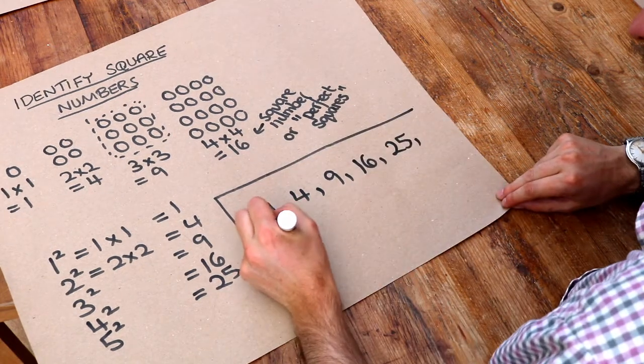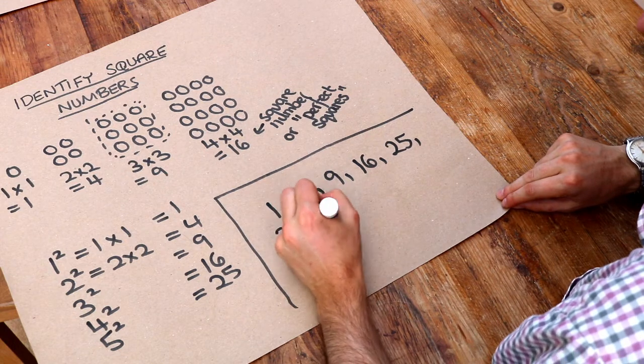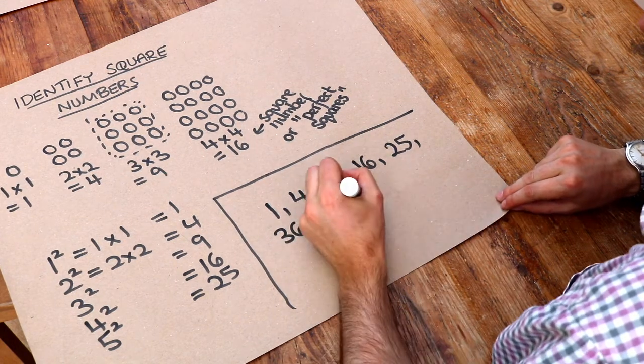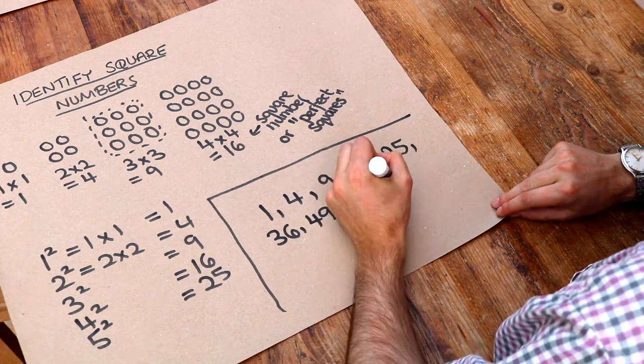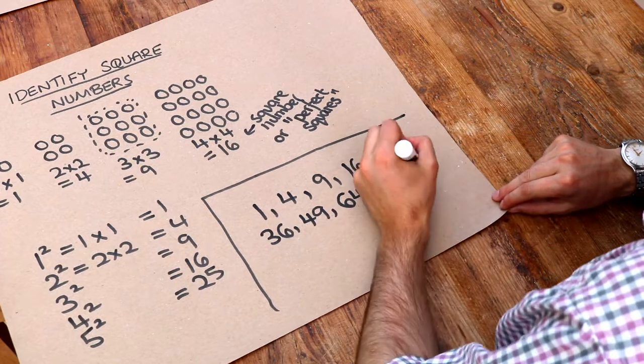Six times six is thirty-six. Seven times seven is equal to forty-nine. Eight times eight is sixty-four. Nine times nine is eighty-one. And ten times ten is a hundred.